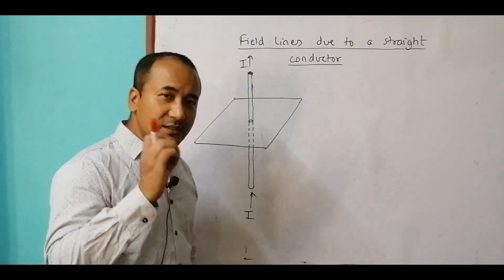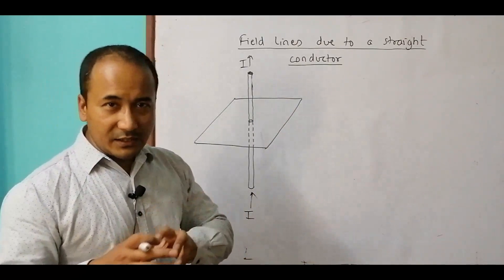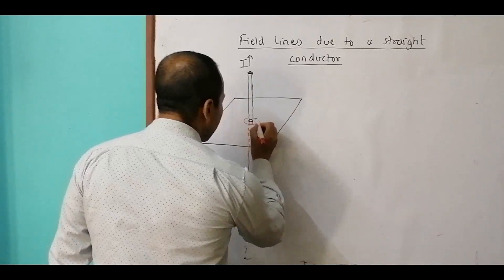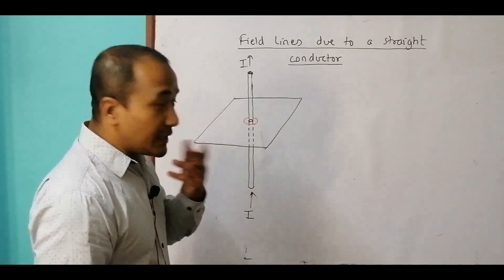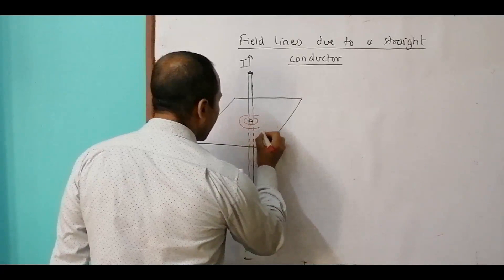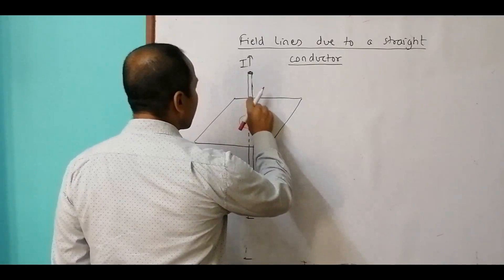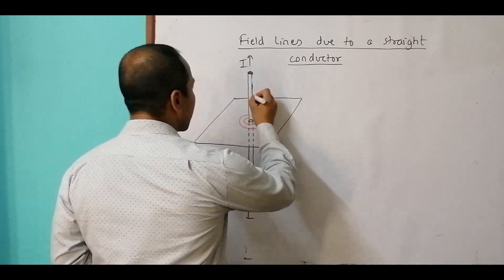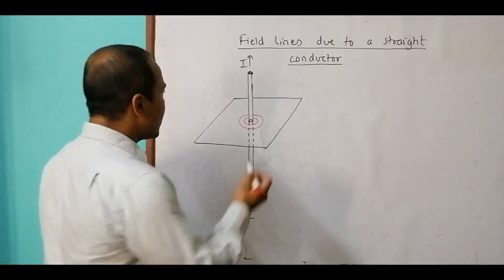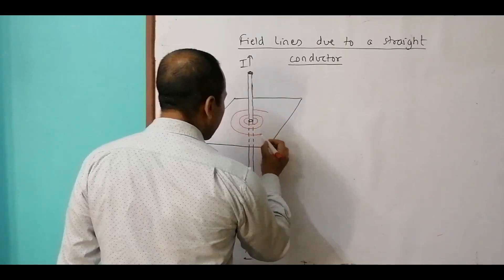They are concentric circles and the spacing between them increases as we go far away from the wire. Since we are watching sideways, they will not appear as circles but as ovals or ellipses. The first circle is like this, the second circle a bit farther, and I increase the distance between the second and third circle more than between the first and second.